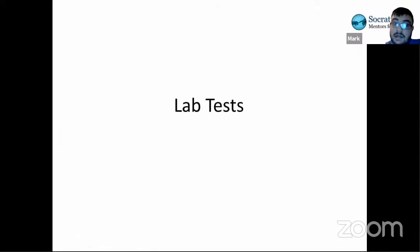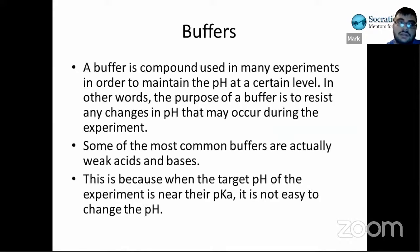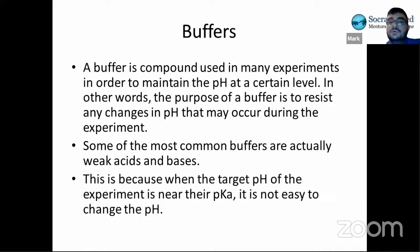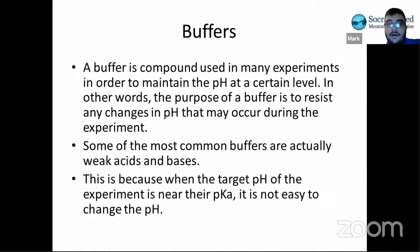The last thing I want to go over is lab testing. In labs, we have this thing called a buffer. A buffer is a compound used in many experiments, especially in biology, in order to maintain the pH at a certain level. When you have a test tube and you have reactions going on — biological or chemical — they may produce products that are acidic or basic, and those products would change the pH of the solution.